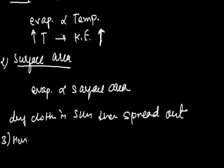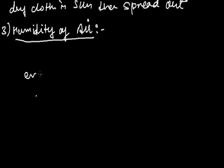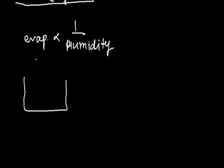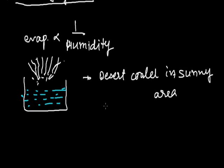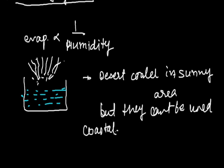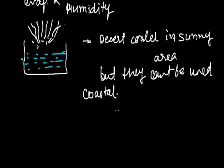Number 3 — Humidity of air. The rate of evaporation is inversely proportional to humidity. If humidity is already high in the atmosphere, vapors leaving the liquid cannot replace the existing atmospheric vapor, so the rate of evaporation decreases. For example, desert coolers work well in dry, sunny areas but cannot be used in coastal areas where humidity is higher and evaporation is lower, so no cooling effect is produced. Number 4 — Wind speed. Evaporation is directly proportional to wind speed, because as vapors form, the wind blows them away, making space for the formation of new vapors, thus increasing evaporation.